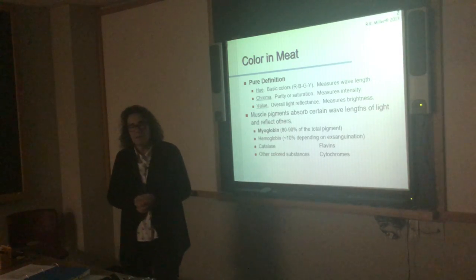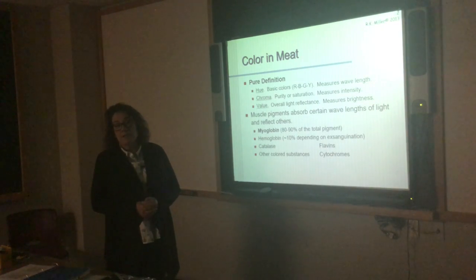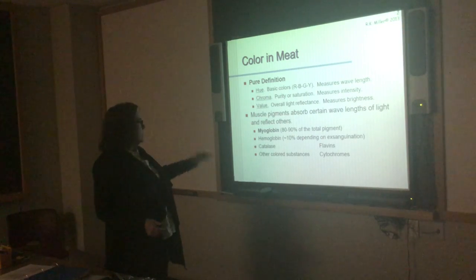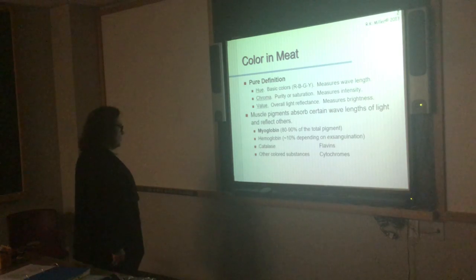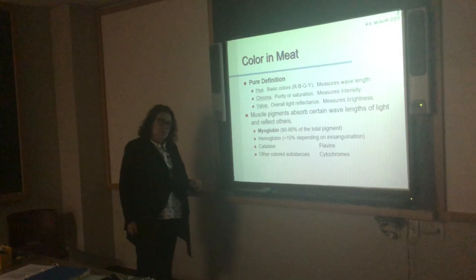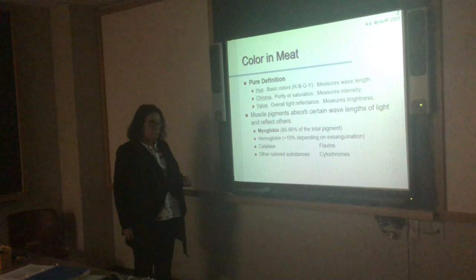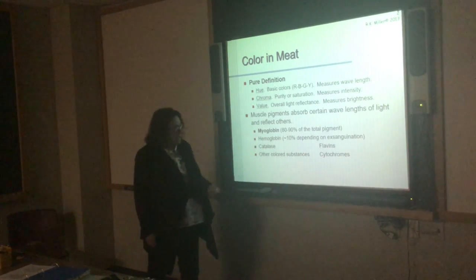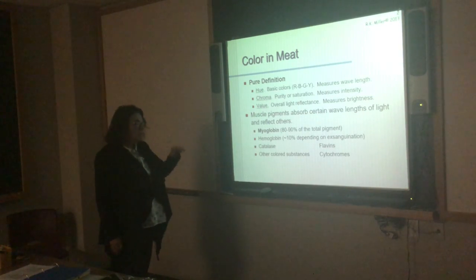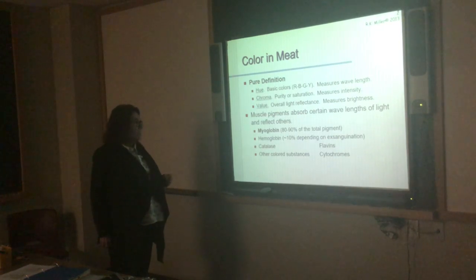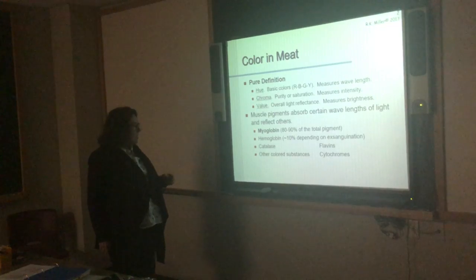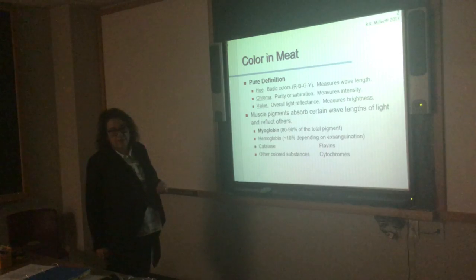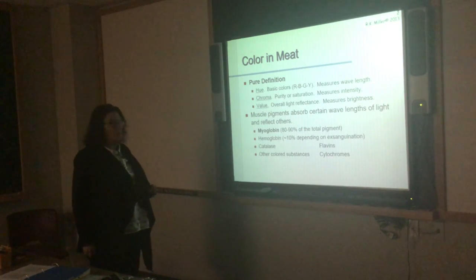Hemoglobin and myoglobin were among the first proteins really characterized in biochemistry. We know that hemoglobin is in blood. During exsanguination, we try to remove most of the blood from the animal, but some remaining hemoglobin stays in the capillaries. There are also other compounds — catalases, mainly flavins — in the sarcoplasm that have some ability to absorb and reflect light, as do cytochromes in the mitochondrial cytochrome chain. But notice most of the pigment is from myoglobin.